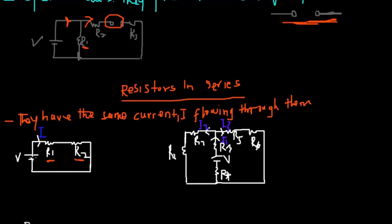Current always flows from the positive end of the voltage source and comes back through the negative terminal — the longer terminal is positive and the shorter one is negative. Since the same current flows through R1 and R2, these two resistors are in series.